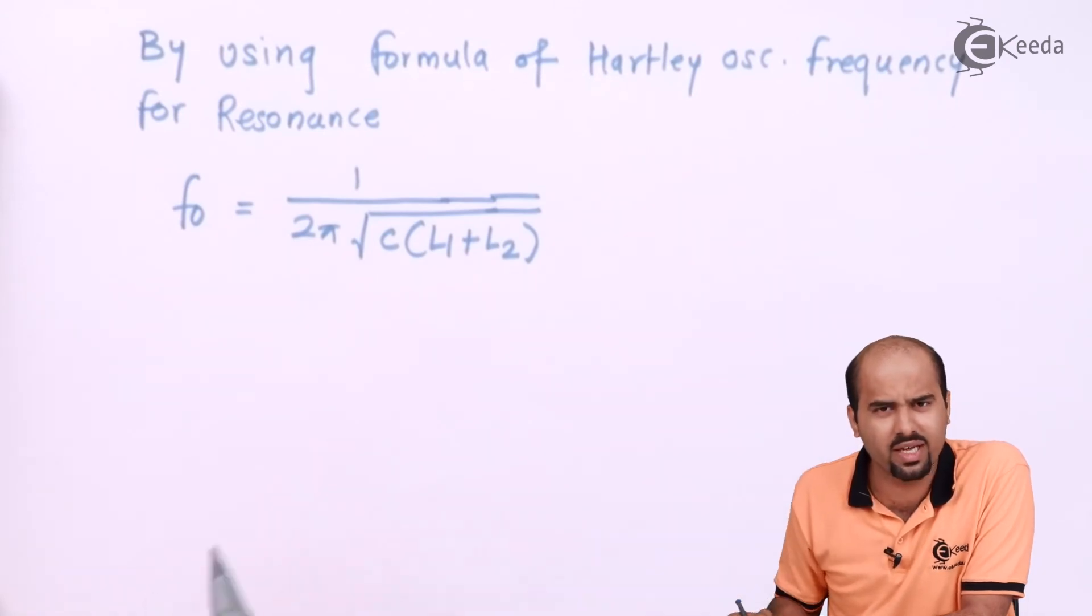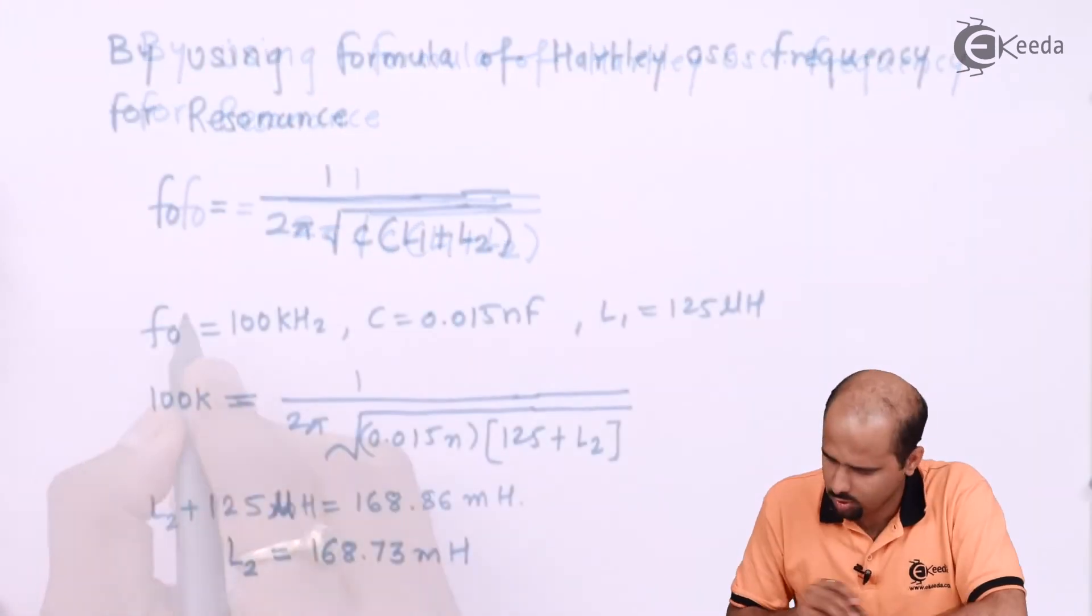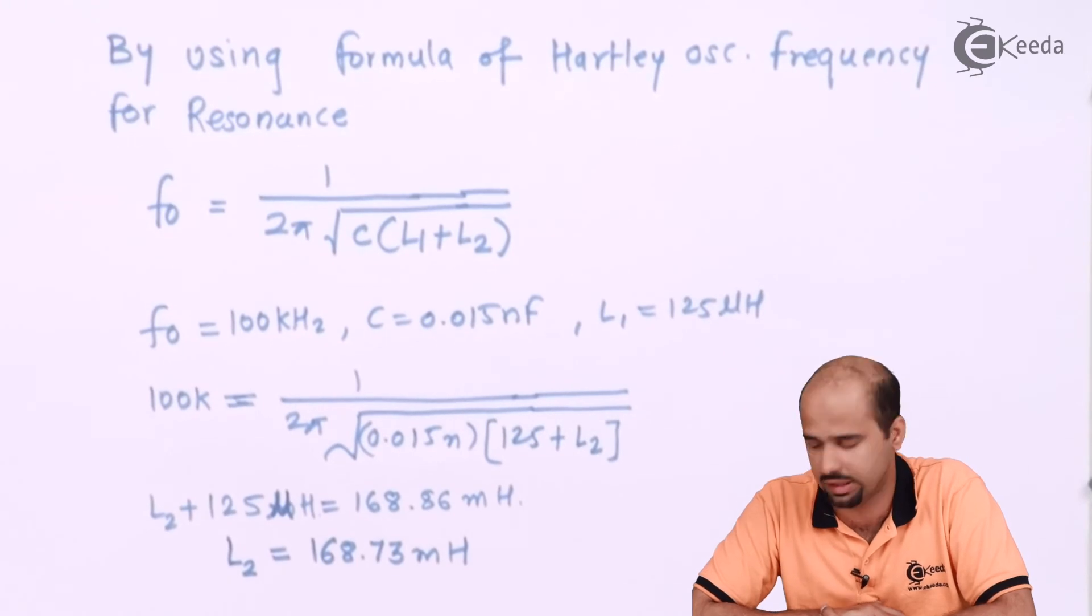So we will just put the value and get the answer, you can also do that by your calculator, so check your calculator is working or not, pause your screen and immediately come to me. The value of L2 is 168.73 mH,